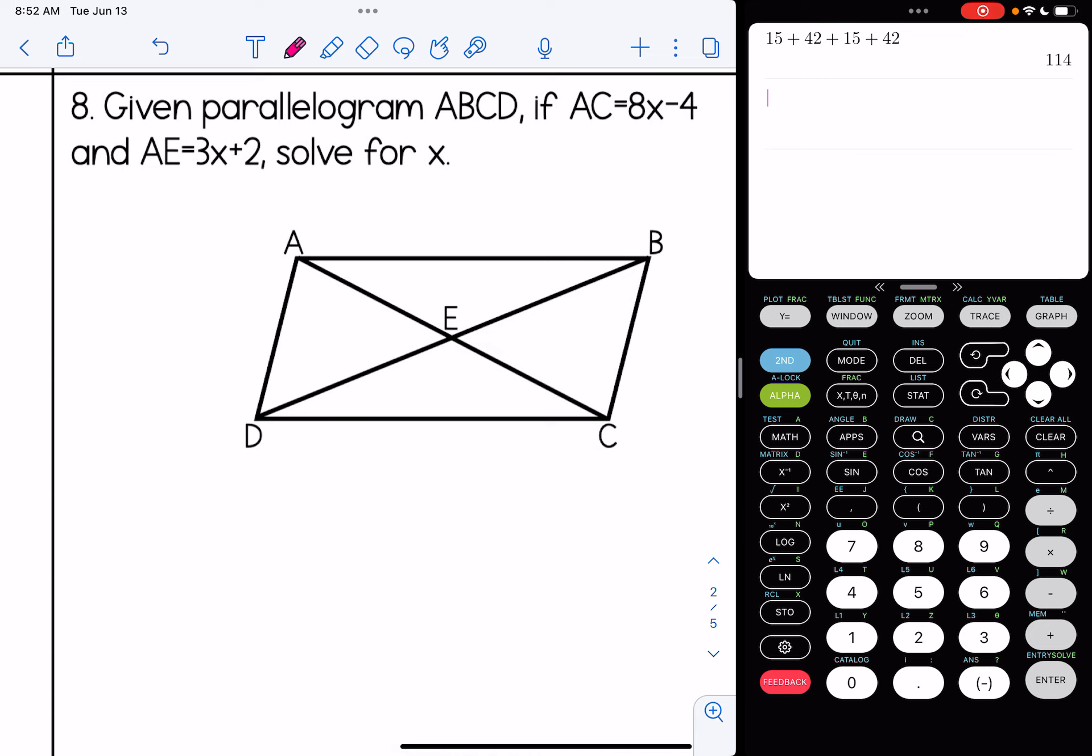Number eight. Given parallelogram ABCD, if AC is 8X minus 4. Since there's a line going through AC, I'm going to just make this bracket here so it's clear that I'm labeling all of it. And we know AE is 3X plus 2. We're going to solve for X. Well, remember that the diagonals bisect each other. So if AE is 3X plus 2, EC must also be 3X plus 2.